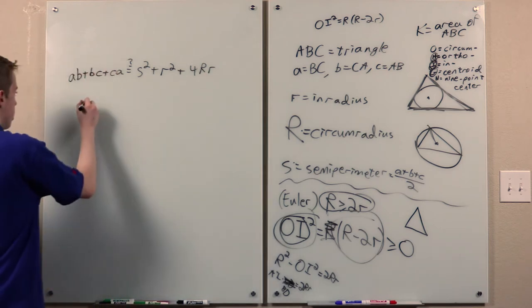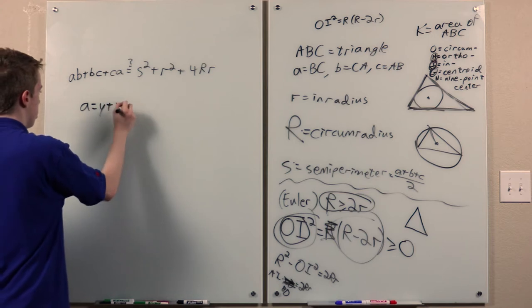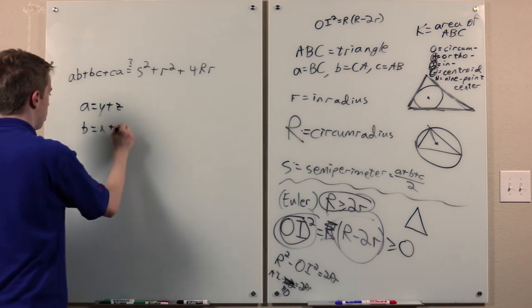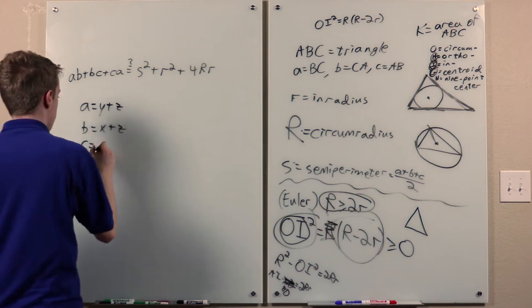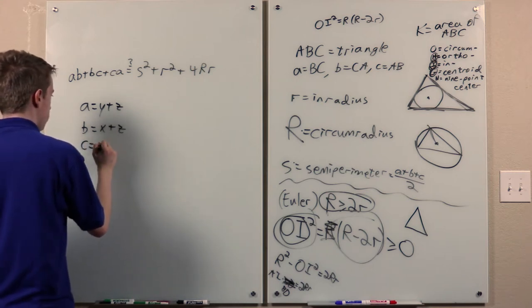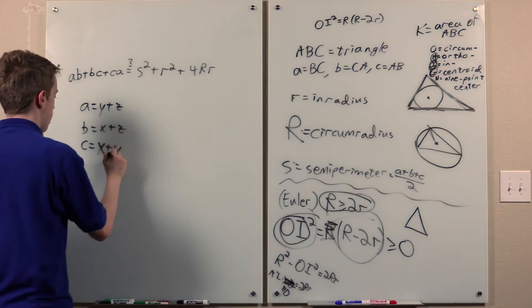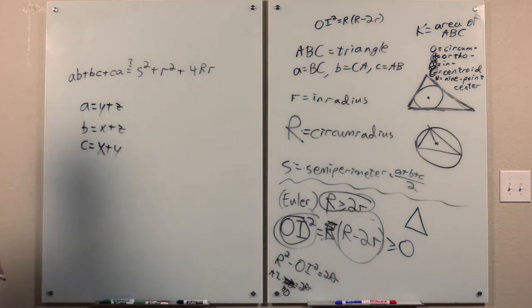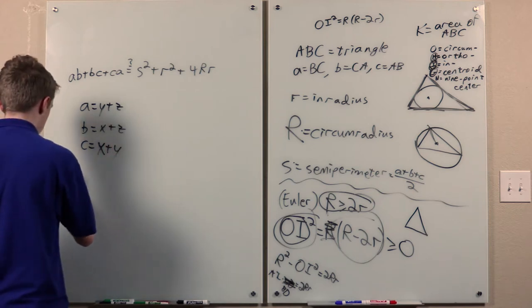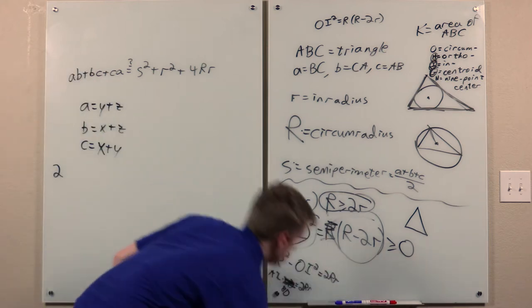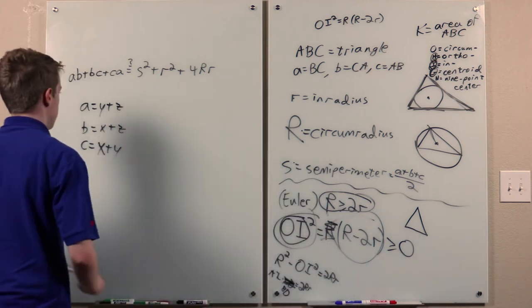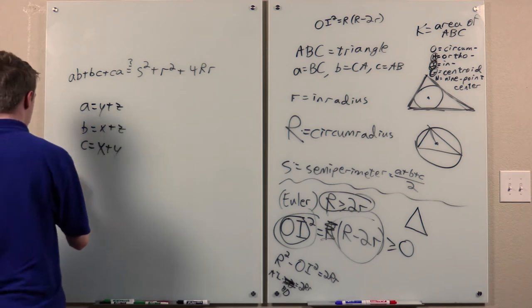So what we want to do here is take the Ravi substitution, x, y, and z as before. No, no, yeah, x plus y, there. Then the right-hand side becomes this. Just expanding.